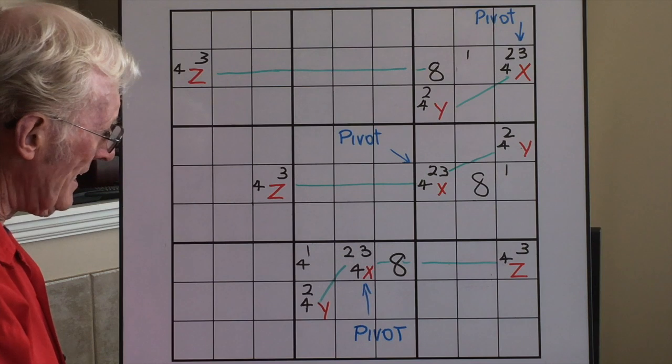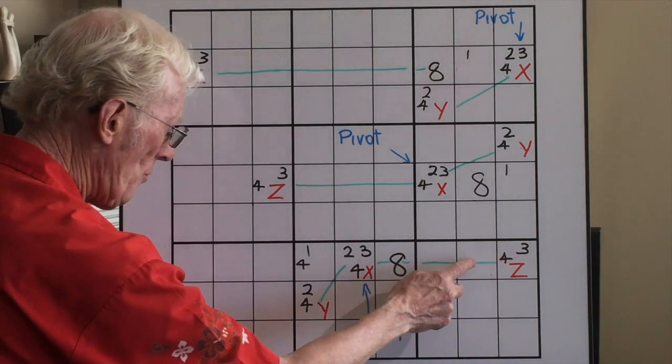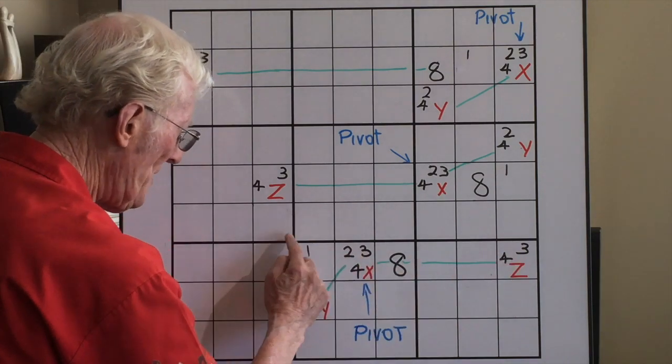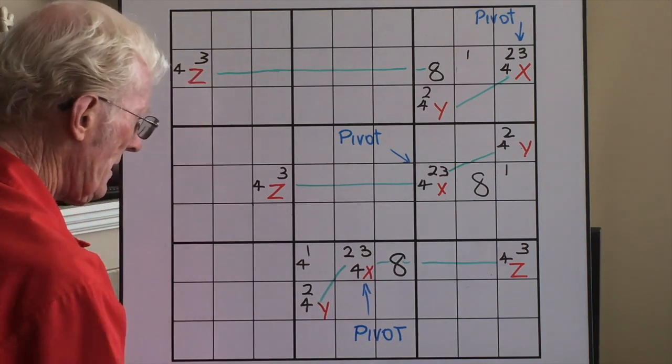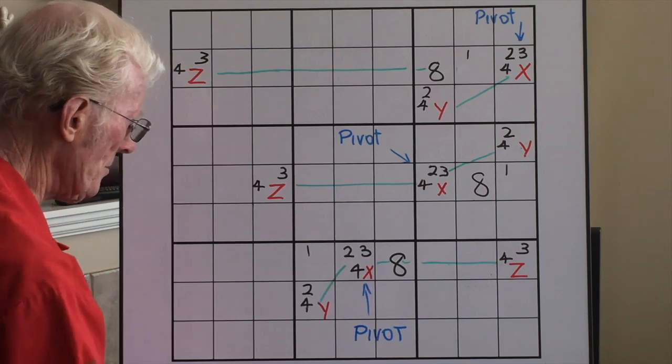And once you've found that, you know that if you've got a row like this with a Z and an X, anything on that row within this block, if it's a four, it can be removed. There it is. It becomes a one.